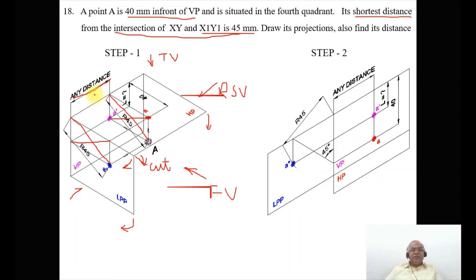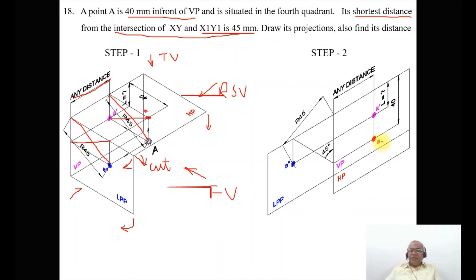Since the distance with respect to the profile plane is not given, we take any distance to get this particular line. The distance in front of VP is 40 mm, and in front of VP is seen in the horizontal plane. Since the image is on HP, that is the top view. You measure the distance as 40 mm — because as HP is rotated, these lines will overlap. Once you get the top view point, you draw a 45-degree line so that the in-front-of-VP distance, which was vertical, is transformed as a horizontal distance.